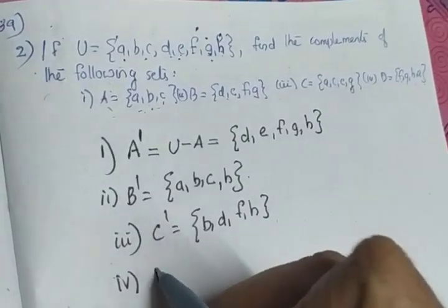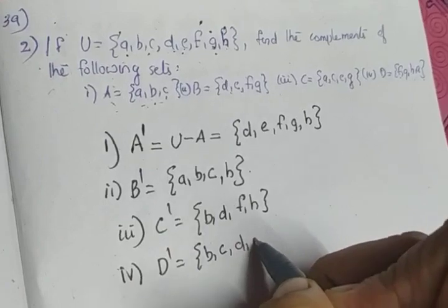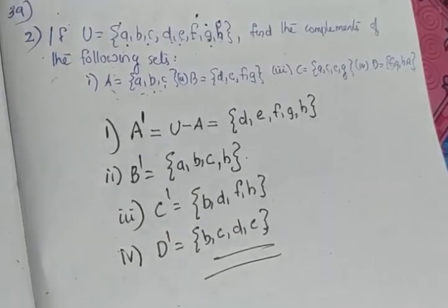So what will be D dash? D dash will be equal to {b, c, d, e}. These are the complements.